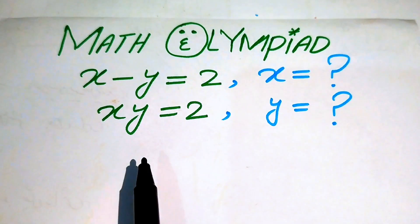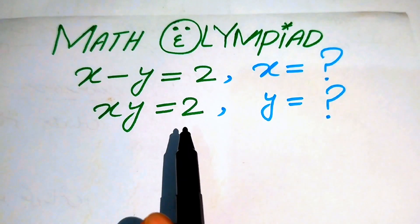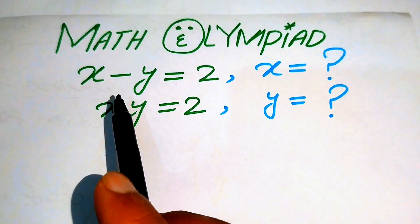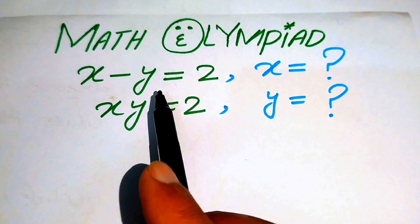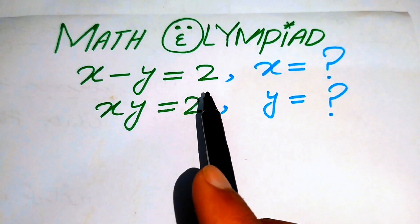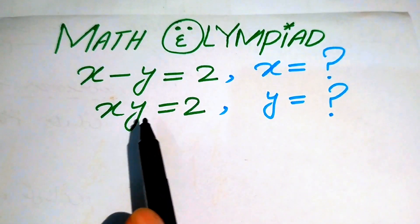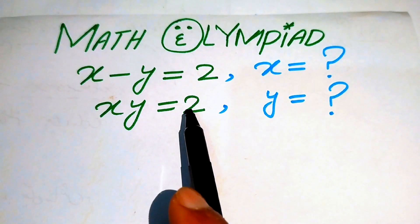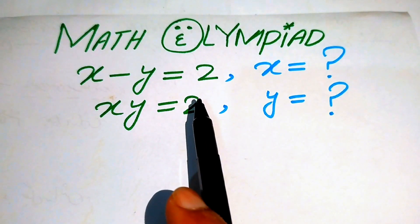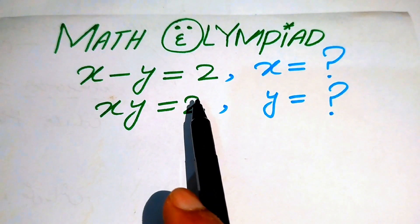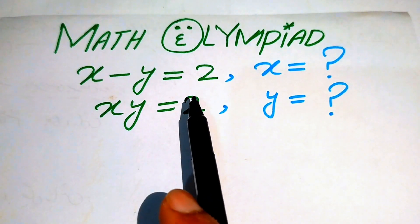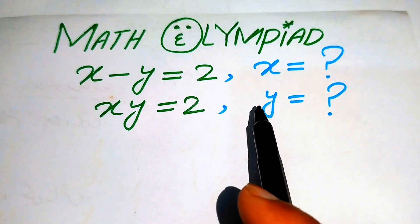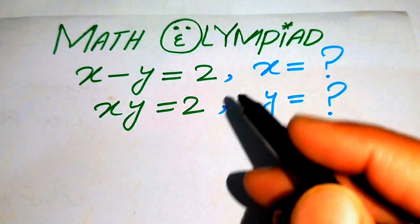Hello everyone, welcome. We have x minus y equals to 2 and xy equals to 2. We will solve these two simultaneous equations to get the values of x and y.